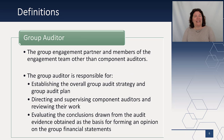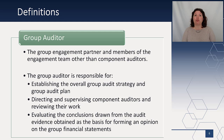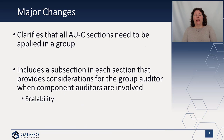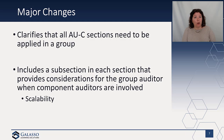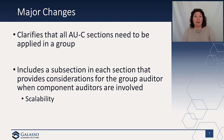We're also going to replace the term group engagement team with simply group auditor — the engagement partner and members of the engagement team that are not the component auditors. The group auditor is responsible for establishing the plan and strategy, directing and supervising component auditors and their work, and evaluating conclusions. They also clarify that when you're doing a group audit, all of the AUC sections still apply. They include a subsection in each section that addresses when there is a component auditor, since you don't have to have a component auditor to have a group audit — you just need multiple components. For scalability, you can skip those subsections if there is no component auditor.